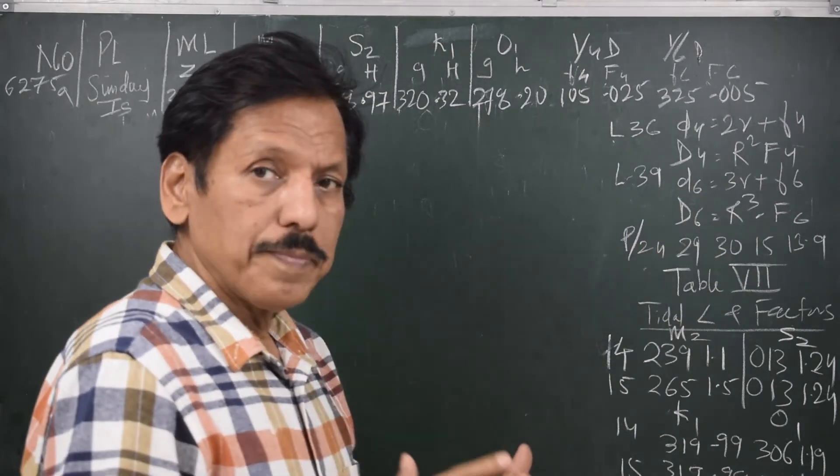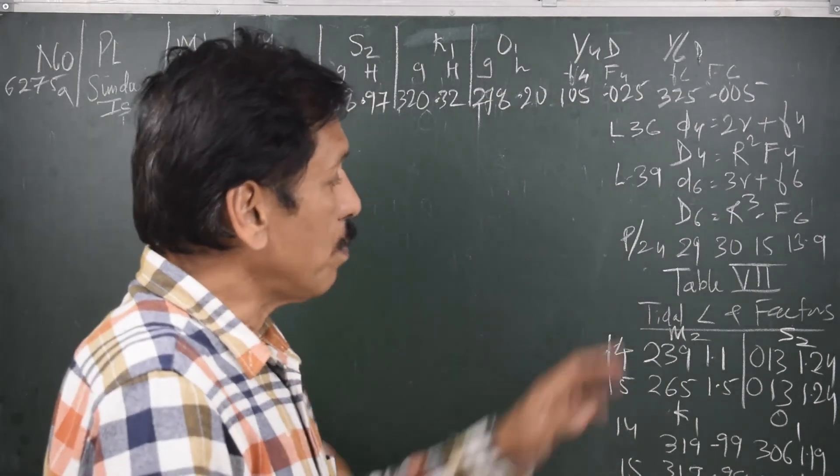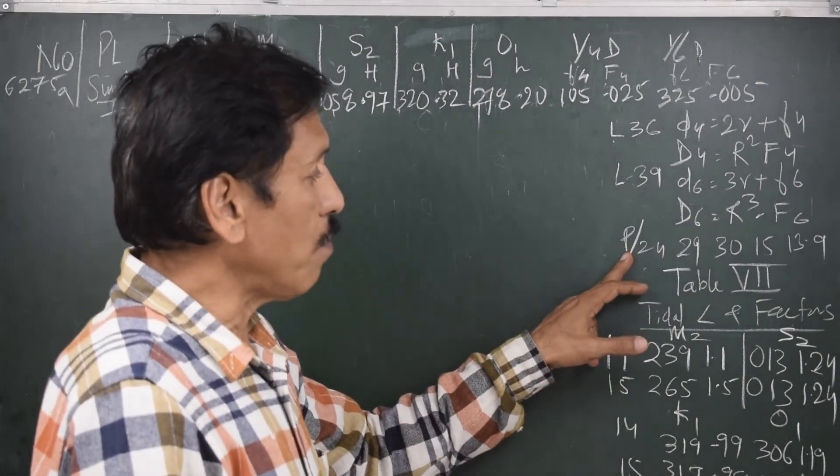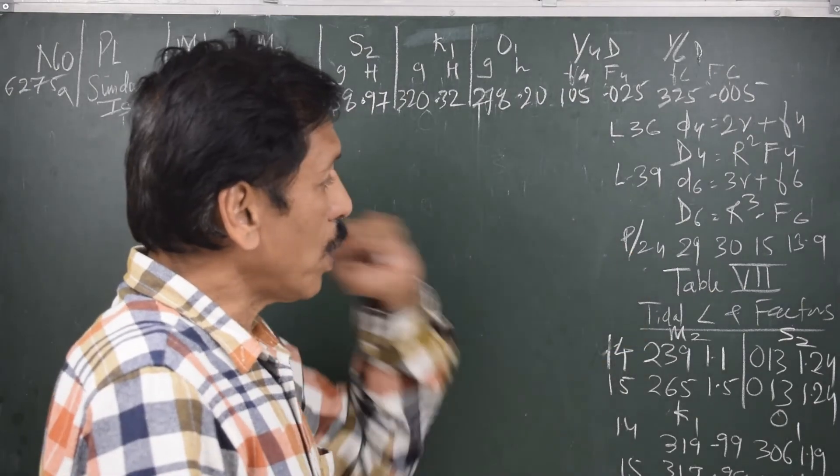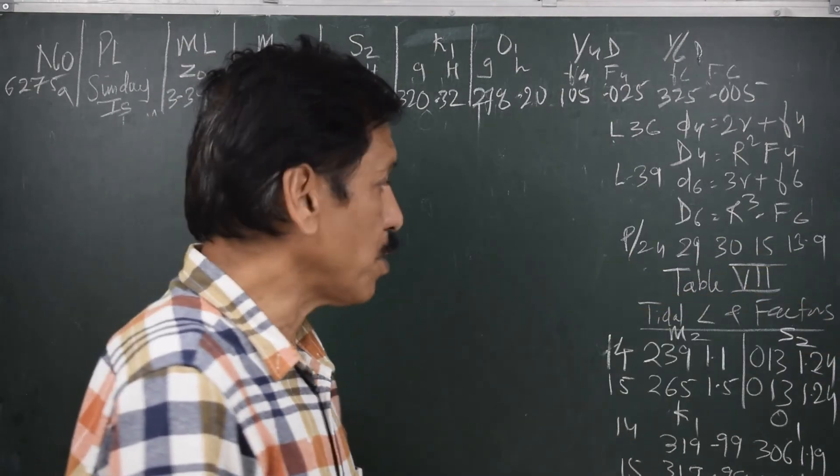Where you have solved example on the right hand side page bottom, you will find these values p by 24 for the four constituents: 29 degrees, 30 degrees, 15 degrees, and 13.9 respectively.